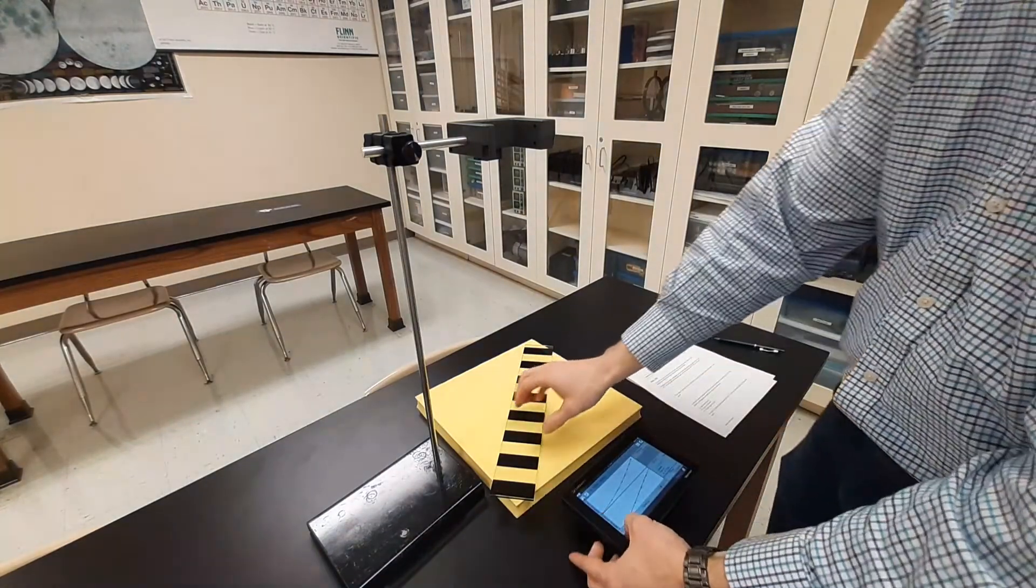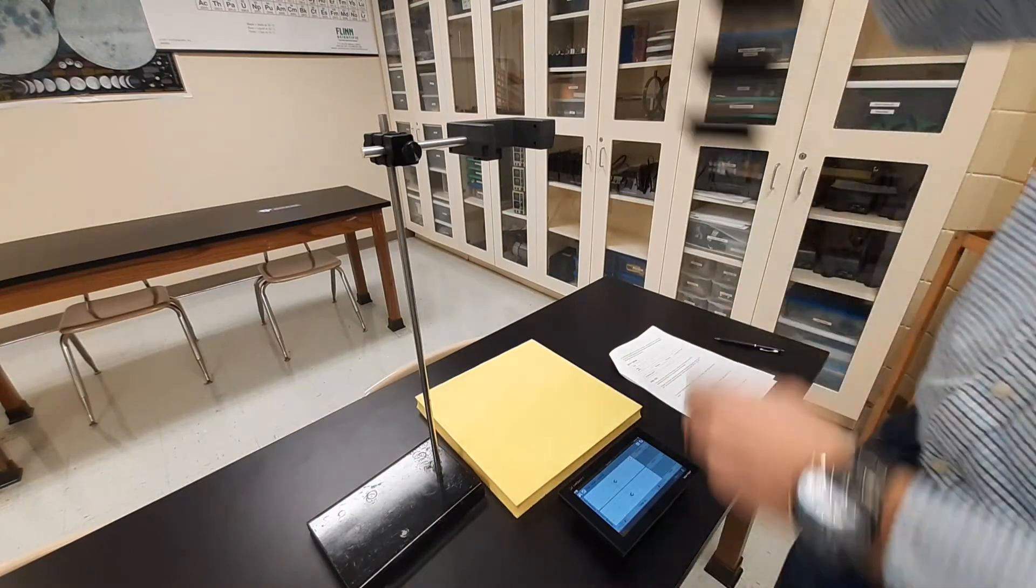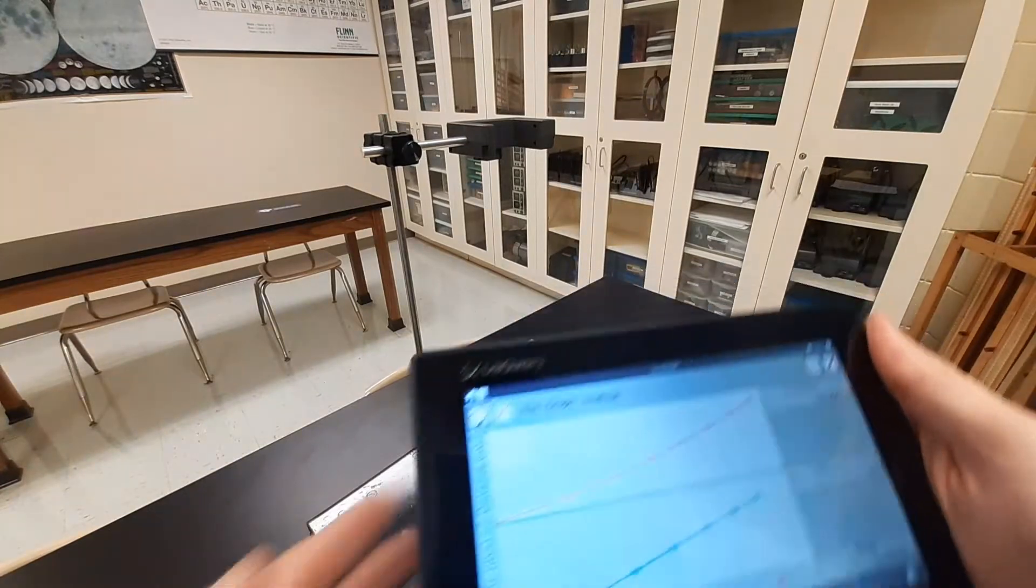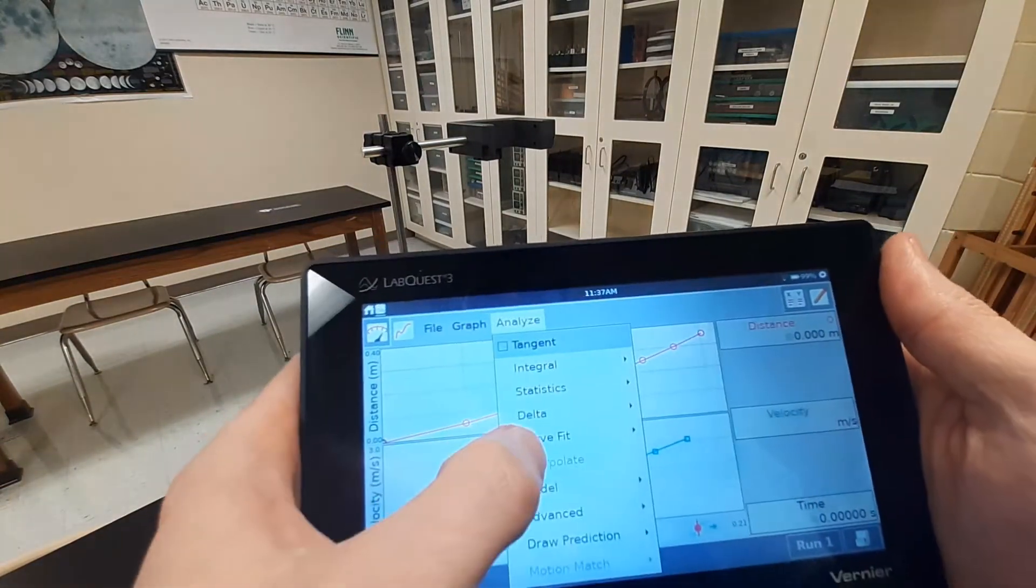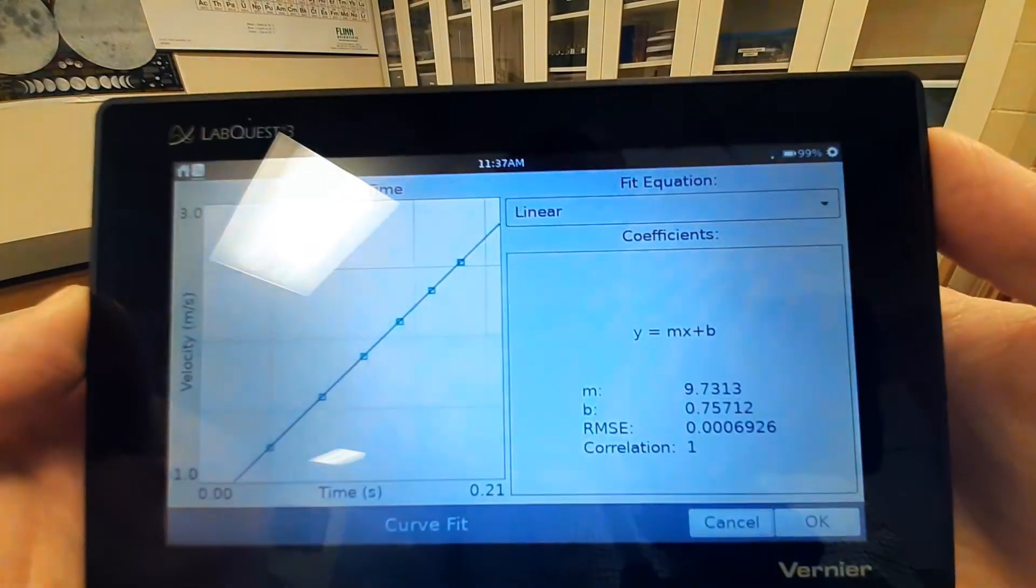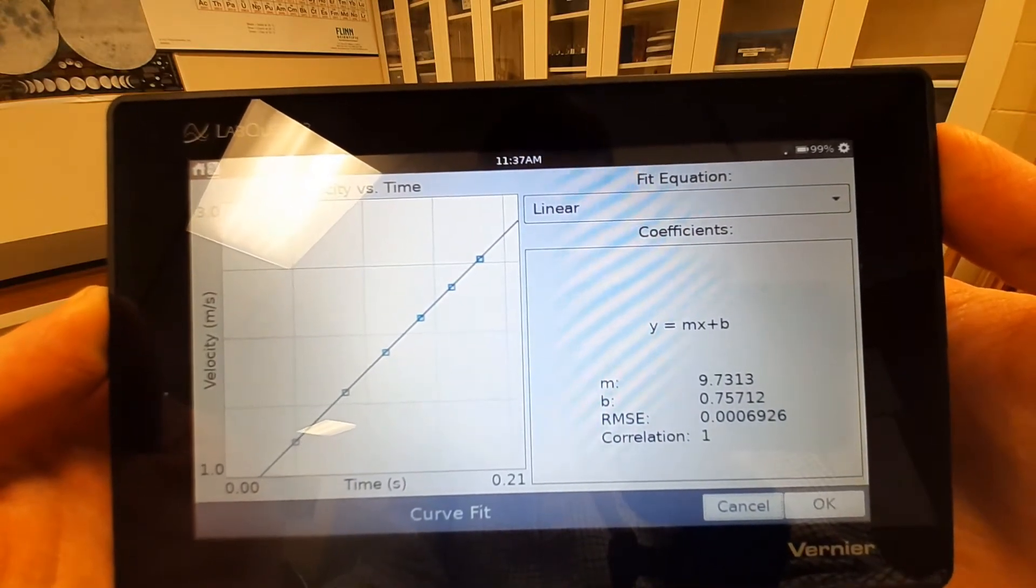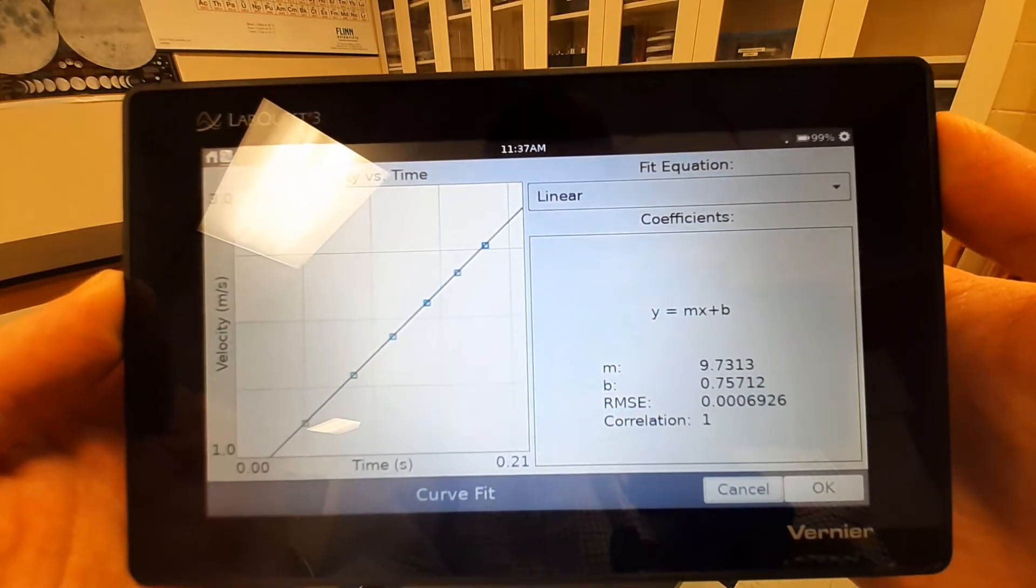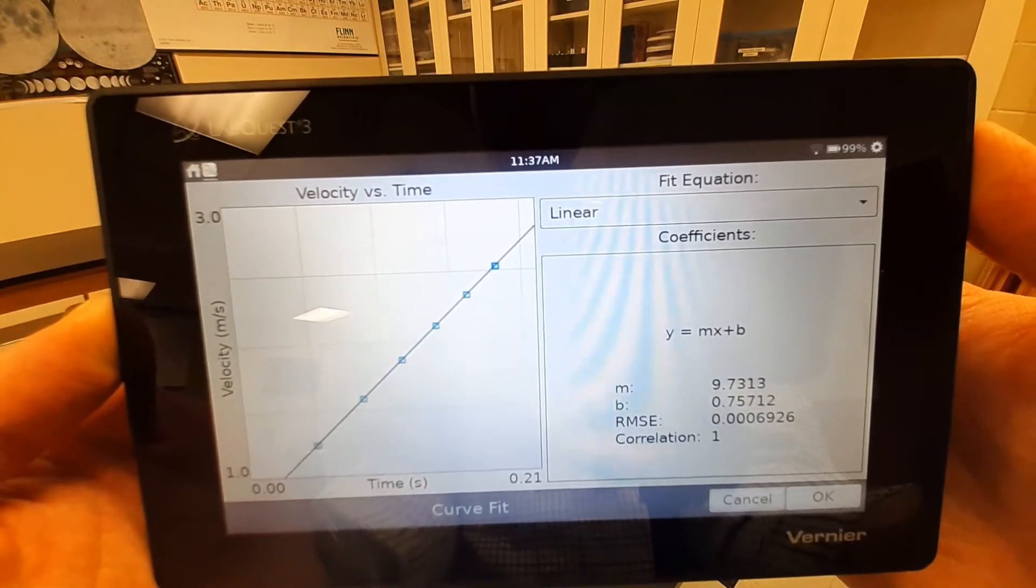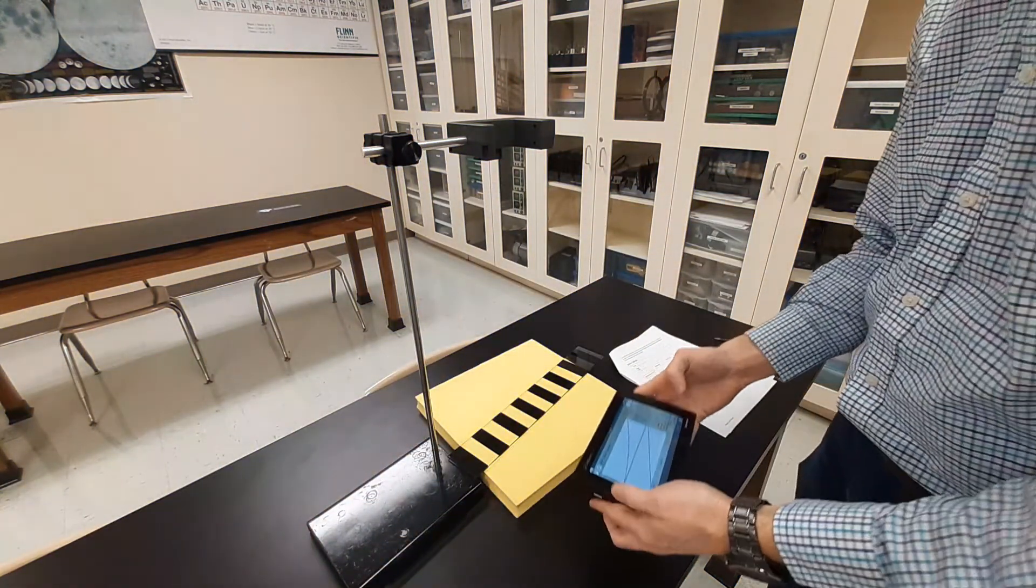Hit okay, start collecting new data. Drop right through there. Analyze my data again. This is trial number four. Got 9.7313. Again, M right there, that's the letter we're using to represent the slope of the line, but the slope is the acceleration. That was trial four.